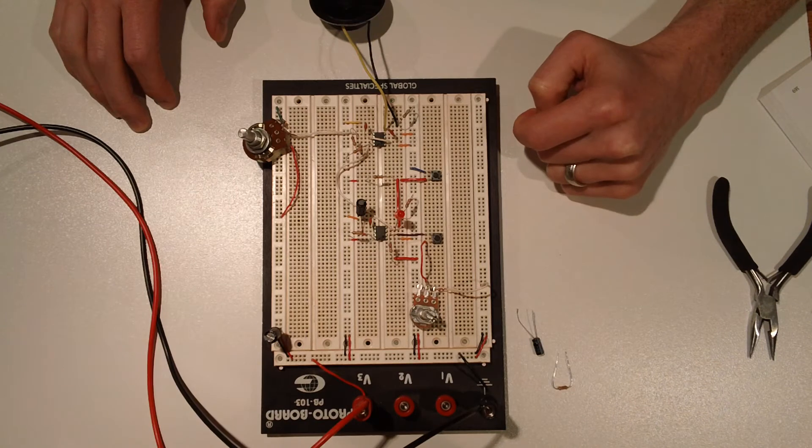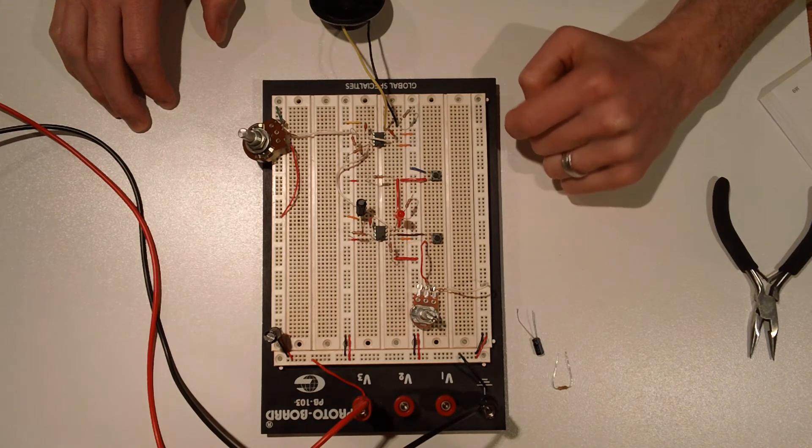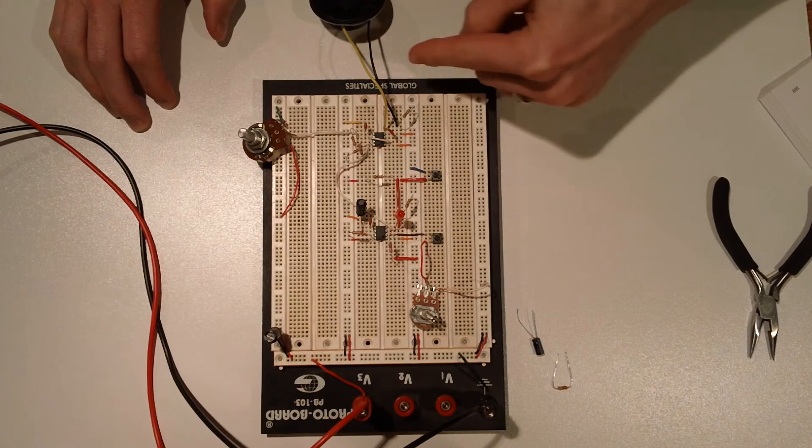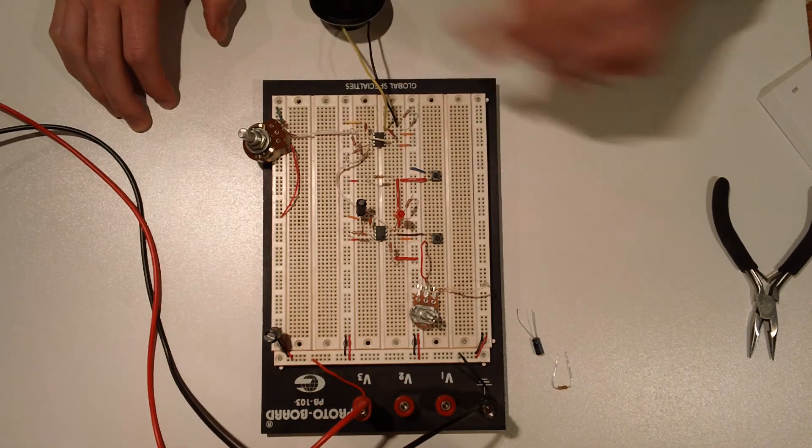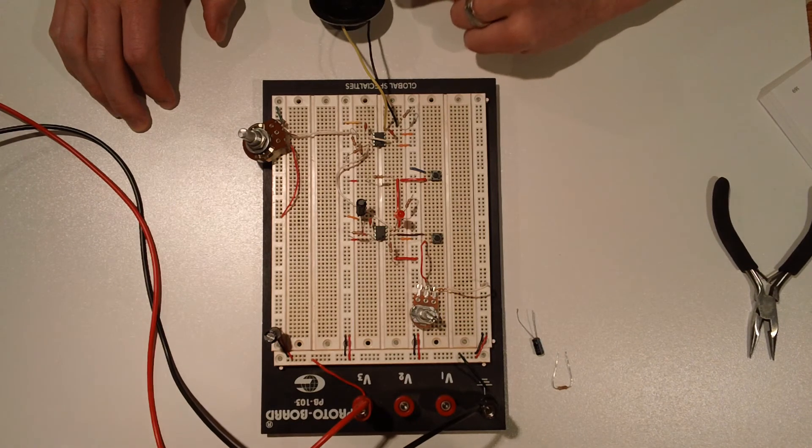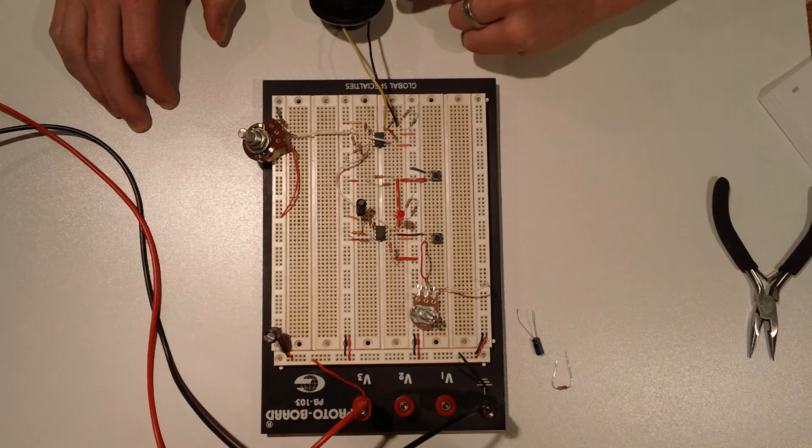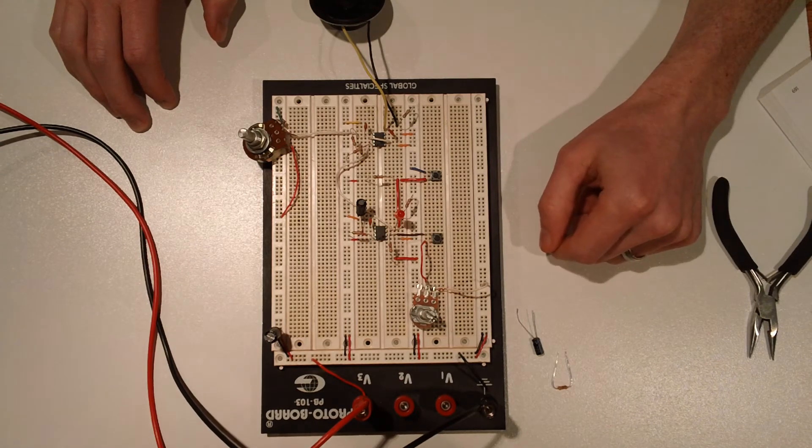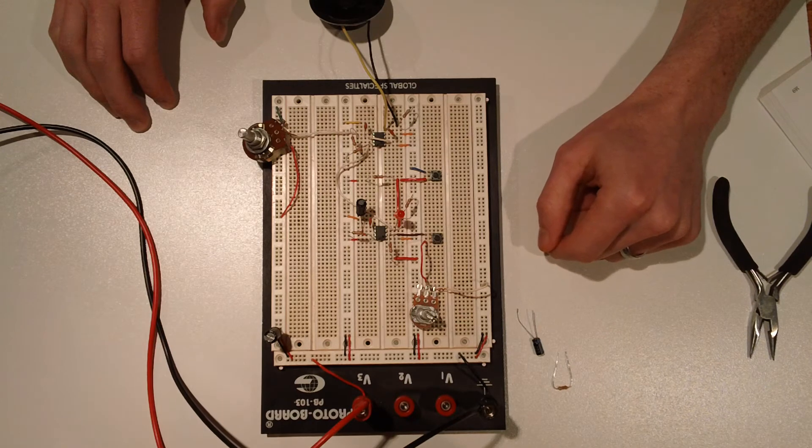And logically that does create a... I confirmed this on my oscilloscope, this does create a perfect square waveform. But you actually couldn't hear sound out of this speaker at the recommended 9 volts that the circuit was supposed to run at. I had to crank the voltage up to about 12, and the reason for that...